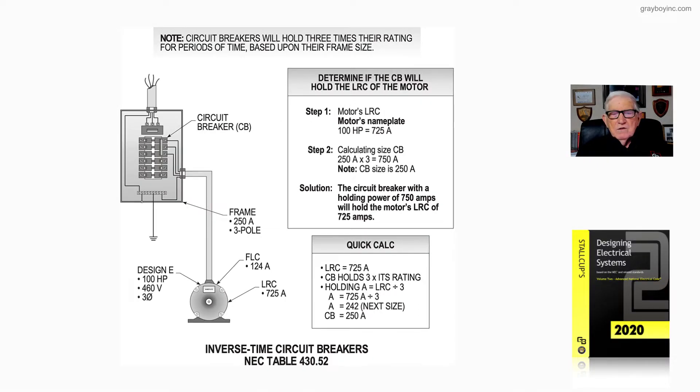This illustration deals with sizing an inverse time circuit breaker to allow a motor to start and accelerate its load. Notice, starting with a note again, an inverse time circuit breaker will hold about three times their rating at 600 volts or less, as a rule of thumb, for a period of time based upon the frame size of the circuit breaker.